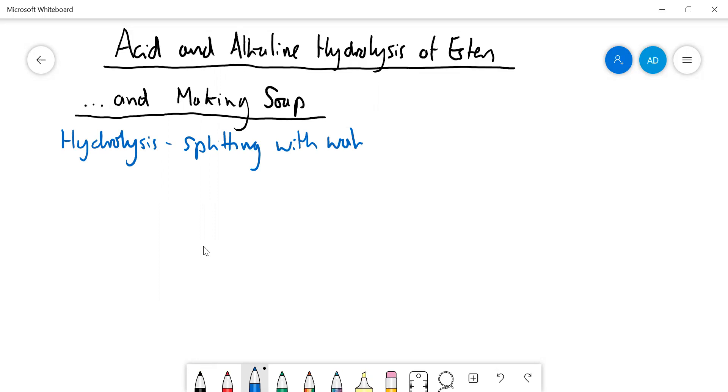So if you've got an ester, let's talk about methyl ethanoate. If we react that with water, we're going to get - now the first step in the mechanism, which will be a nucleophilic addition elimination, but the first step in the mechanism is going to be the lone pair on the oxygen attacking the carbonyl compound.